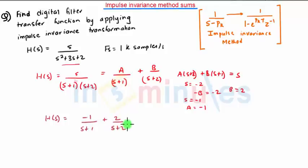The transformation equation is this. We will use this equation to perform the impulse invariance transformation. Here the frequency is 1 kilosamples per second. So 1k samples is equal to 1000 samples per second. So T is equal to 1 upon 1000, that will be equal to 10 raised to minus 3 seconds.